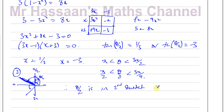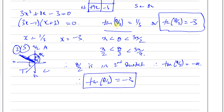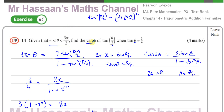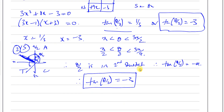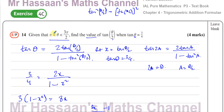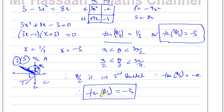Since theta over 2 is in the second quadrant, using ASTC, only sine is positive there, so tangent is negative. Therefore tan(θ/2) must be negative. So out of 1/3 and −3, the correct answer is −3. Tan(θ/2) can't equal 1/3 because θ/2 is in the second quadrant where tangent is negative. Specifically, theta is between 180° and 270°, so θ/2 is between 90° and 135°, confirming it's in the second quadrant. Therefore, tan(θ/2) = −3.